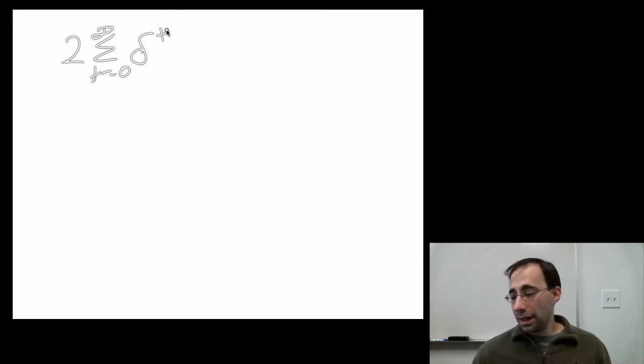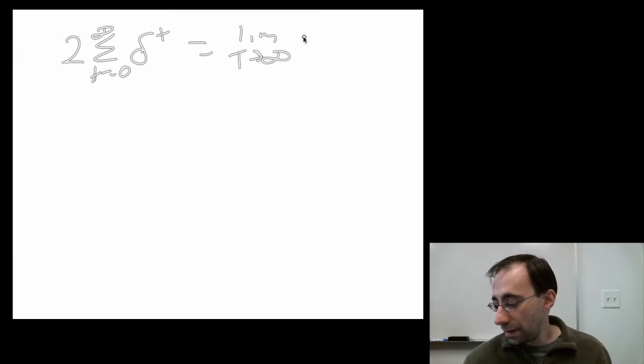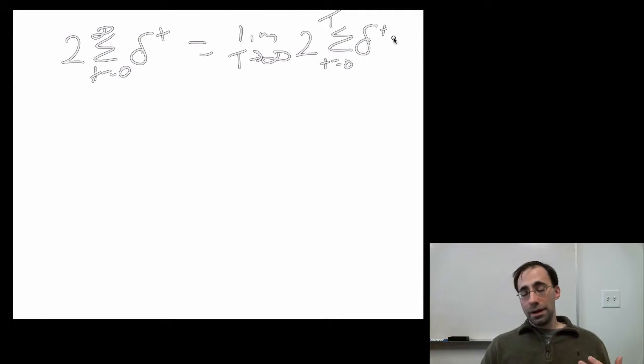Let's go to the example we did before of this series. This is an infinite series. It's the same thing as writing the limit as big T goes to infinity of 2 times the sum of t equals 0 to big T, delta to the t. They're both the same thing. It's the limit of a series. How do you calculate this?